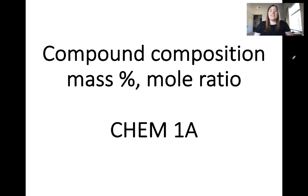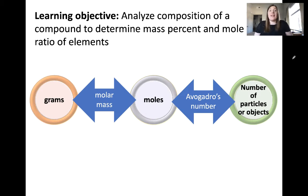In this video I'll be discussing compound composition, determining both the mass percent and the mole ratio. Our objective is to analyze the composition of a compound to determine its mass percent and mole ratio of elements within that compound. This is important because it helps us get between quantities we can measure in the laboratory in grams and what's occurring on the molecular level — the number of particles or objects.